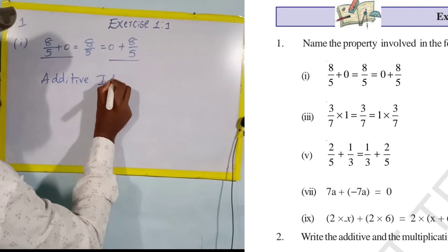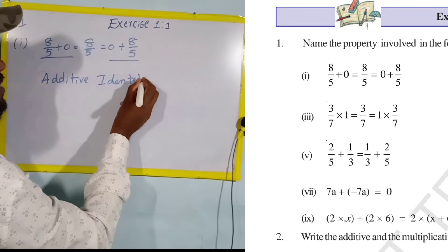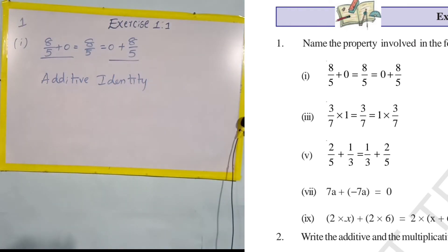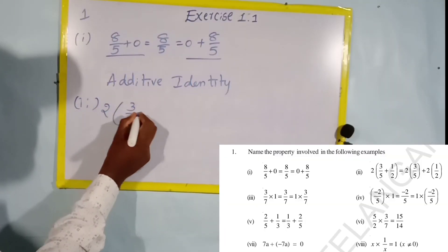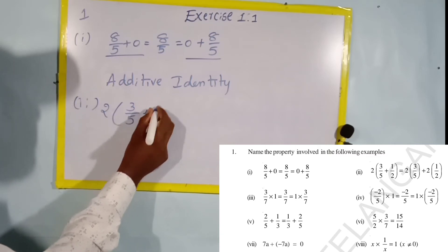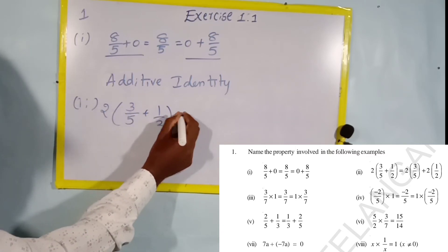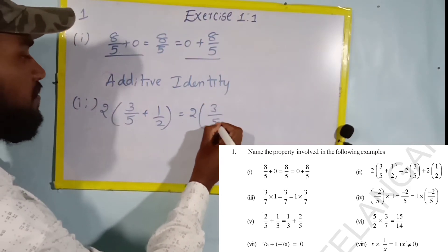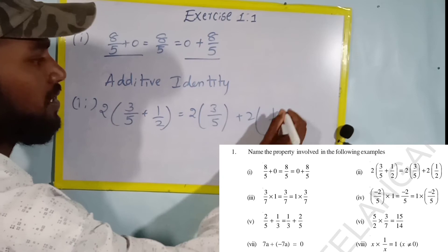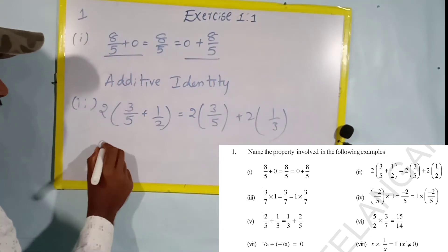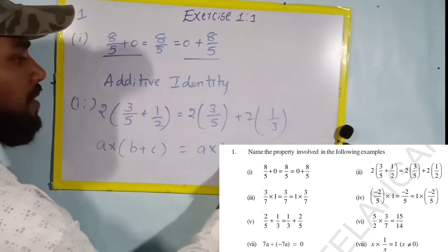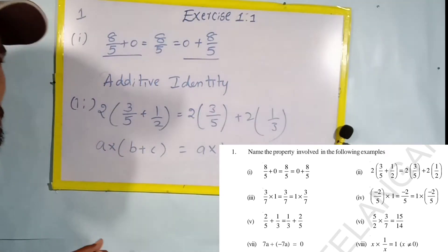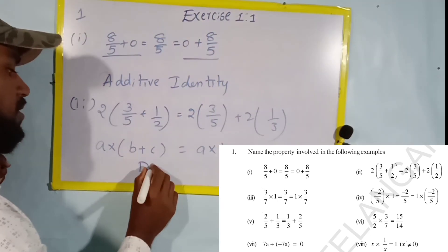So the answer for the first one is additive identity property. Next, the second one: two-thirds into the quantity five by two plus one by two equals two-thirds into five by two plus two-thirds into one by three. This matches a into b plus c equals a into b plus a into c, which is the distributive property.